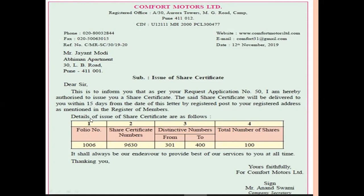The details of issue of share certificate are as follows, presented in four columns: Column 1 — Folio Number: 1006. Column 2 — Share Certificate Number: 9630. Column 3 — Distinctive Numbers: Lot 301 to 400, meaning this particular lot is issued to Mr. Jayant Modi. Column 4 — Total Number of Shares: 100 shares. The paragraph closes with: 'It shall always be our endeavor to provide the best of our services to you at all times.'